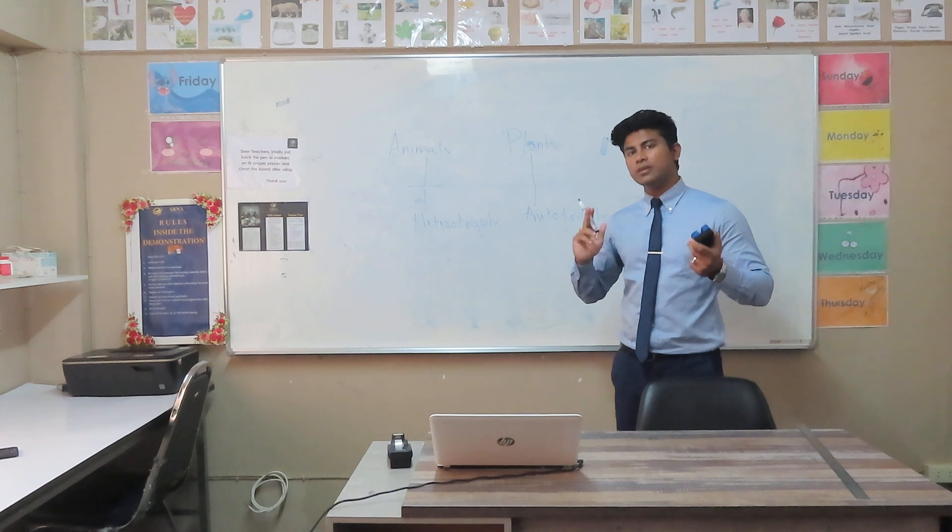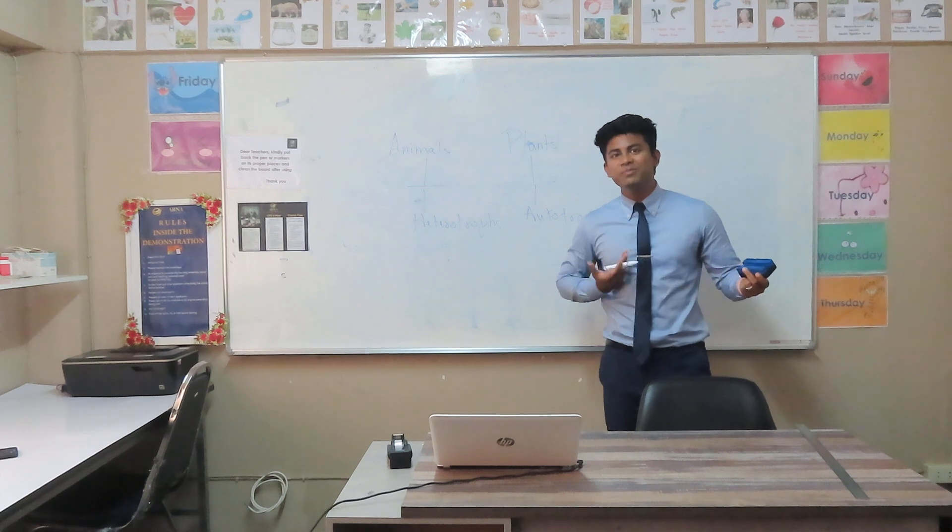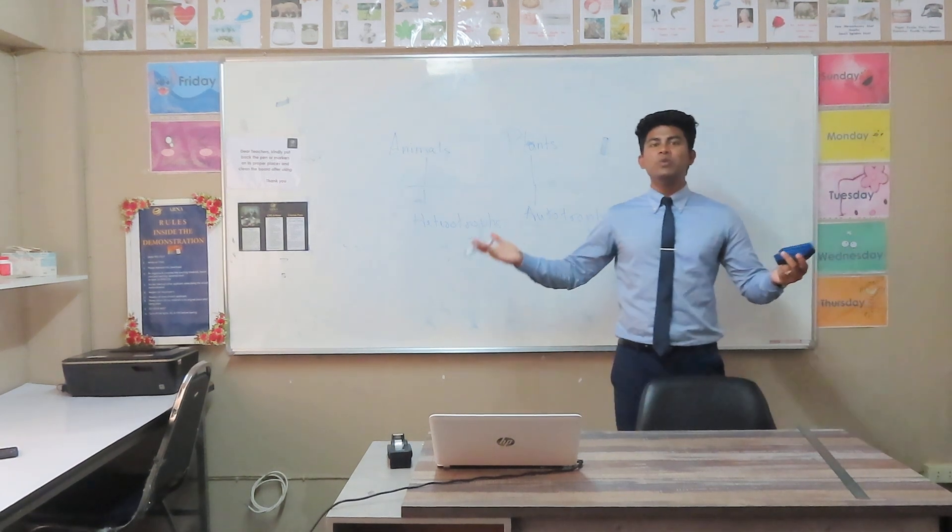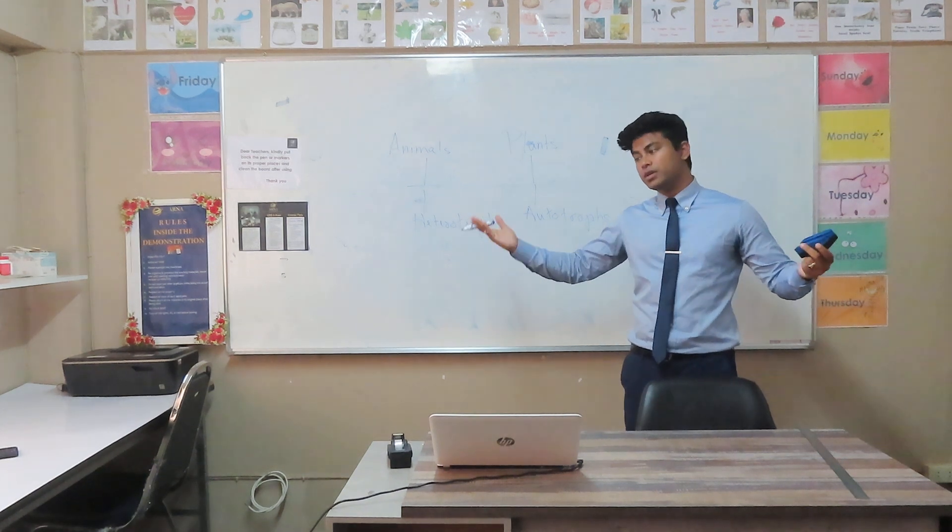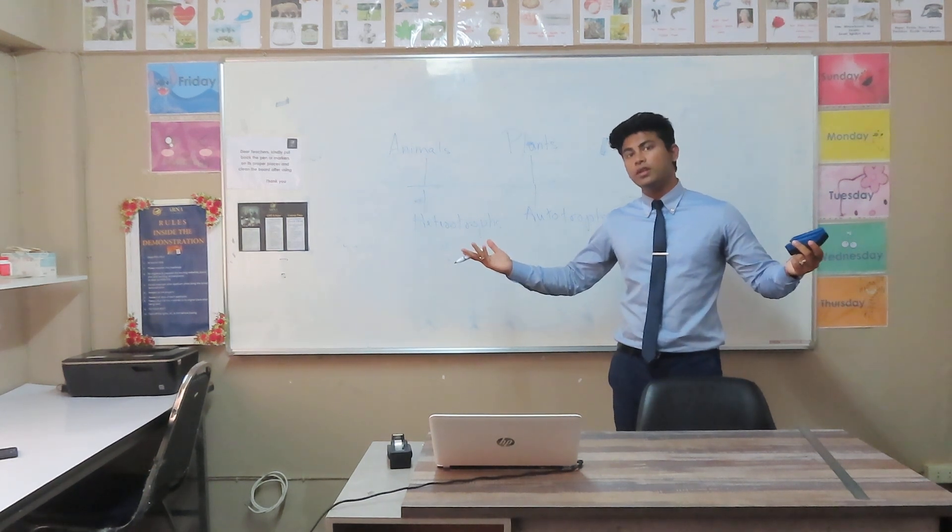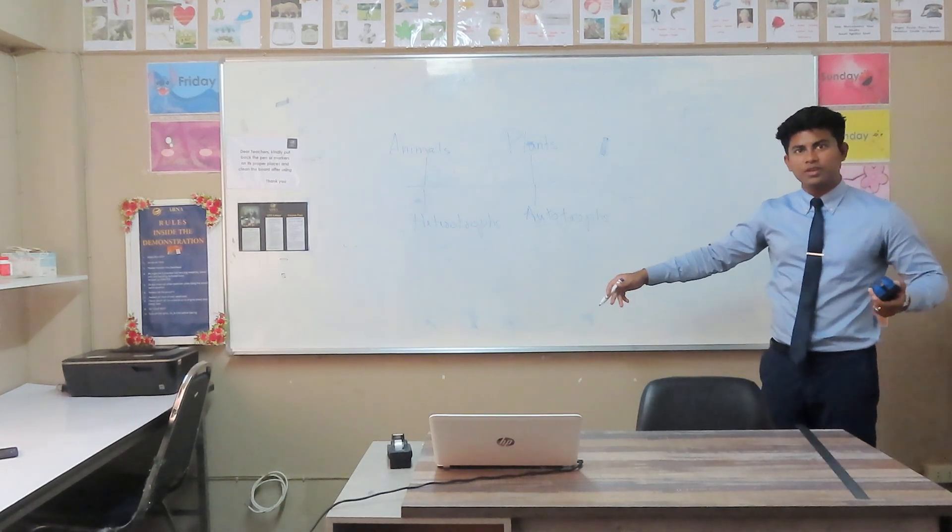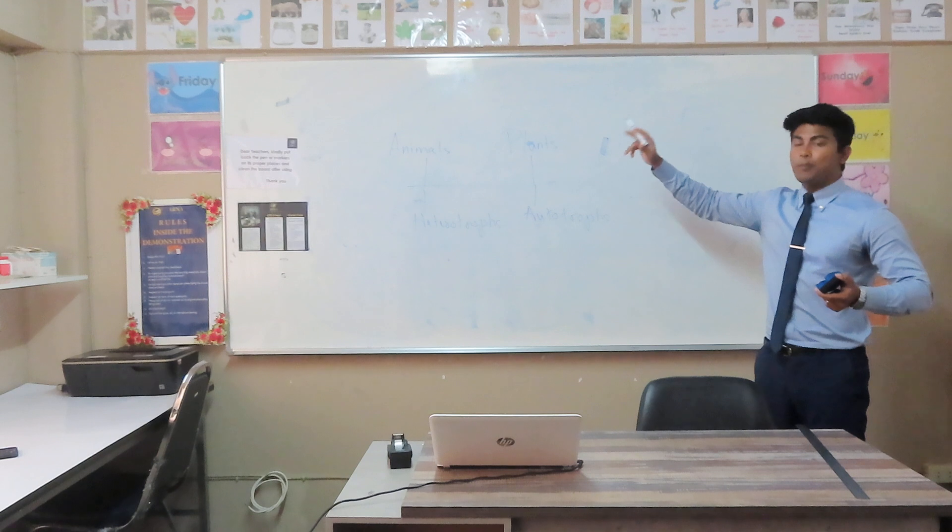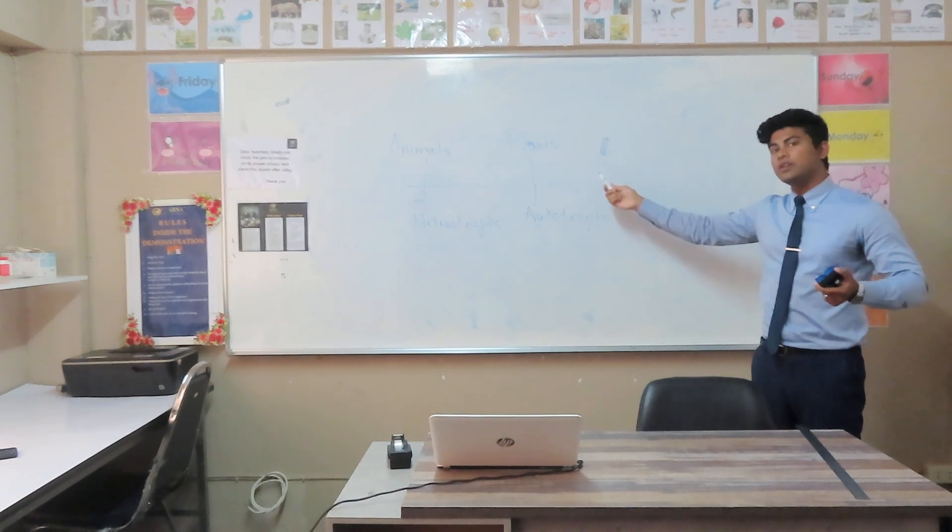And the third type of animals are known as omnivores. Example, us, human beings, we are a type of omnivores animals. Why are we known as omnivores? Bear is another example. Because we consume both plants and animals for our food. So these are the main types of difference when you classify living things.